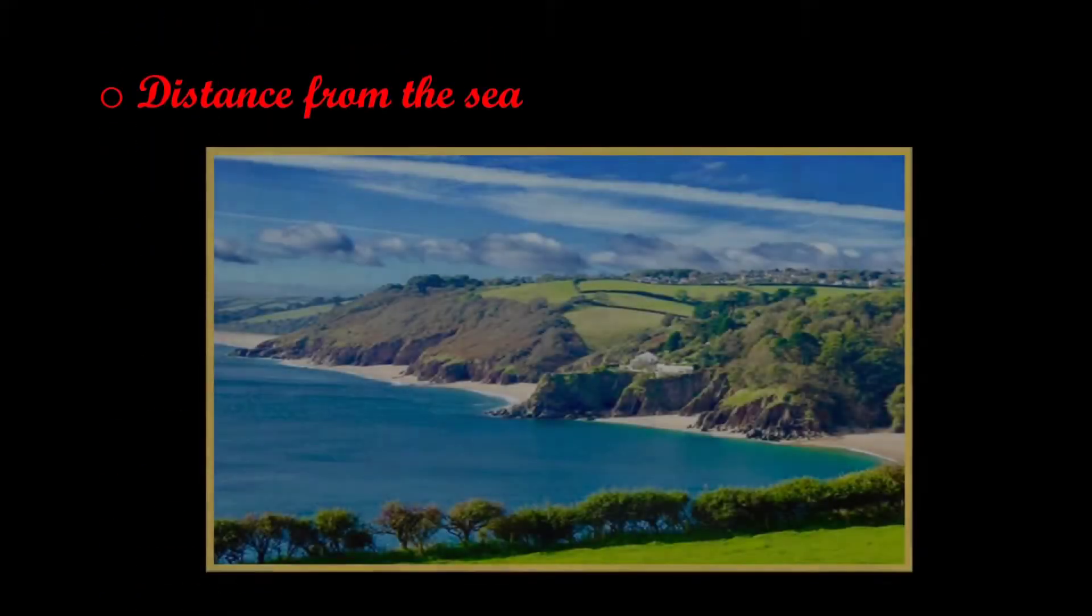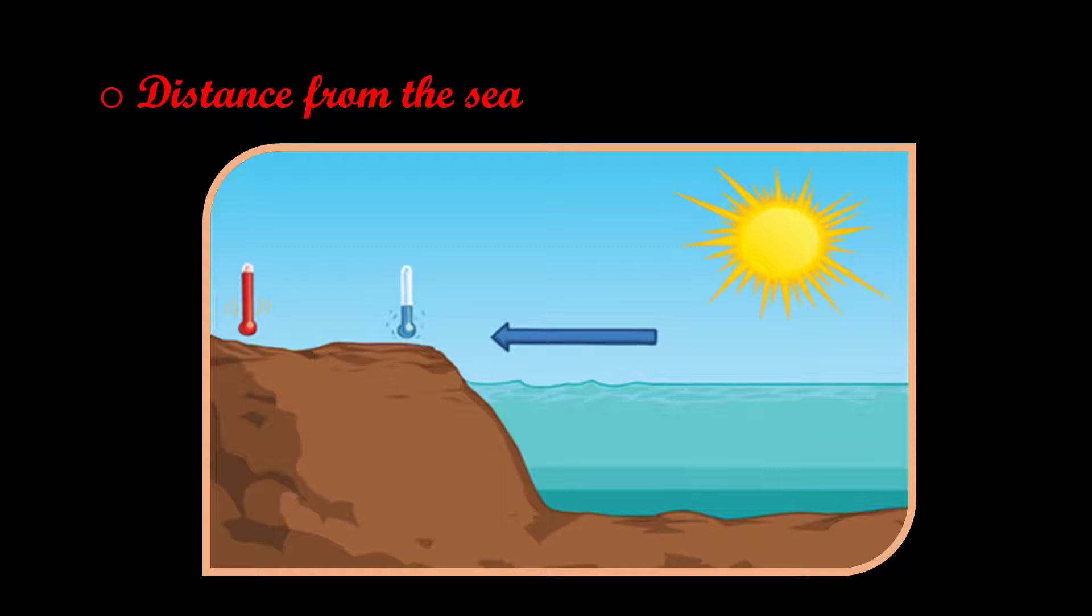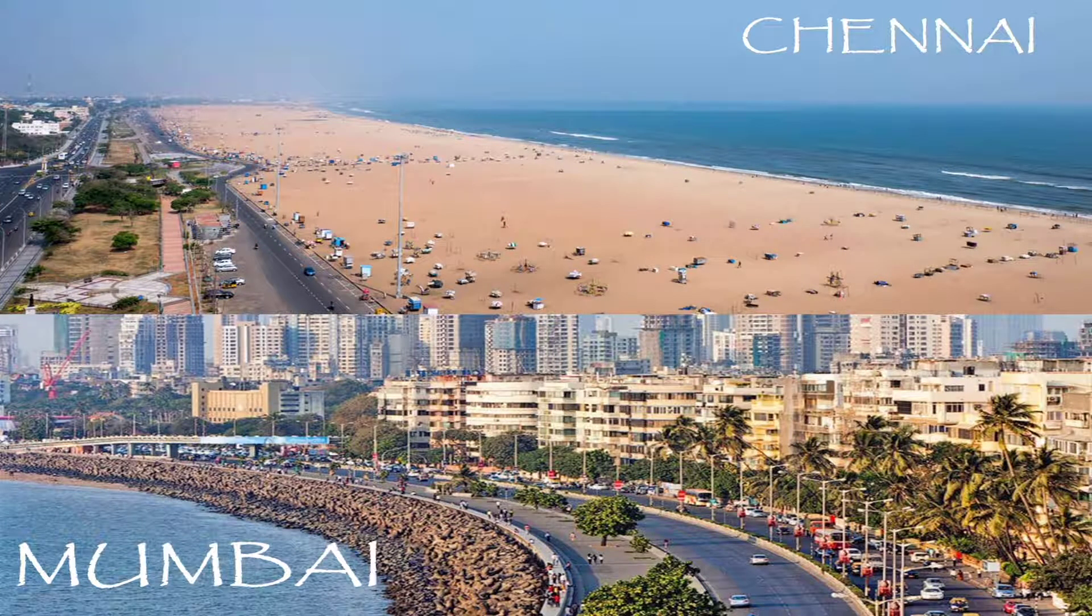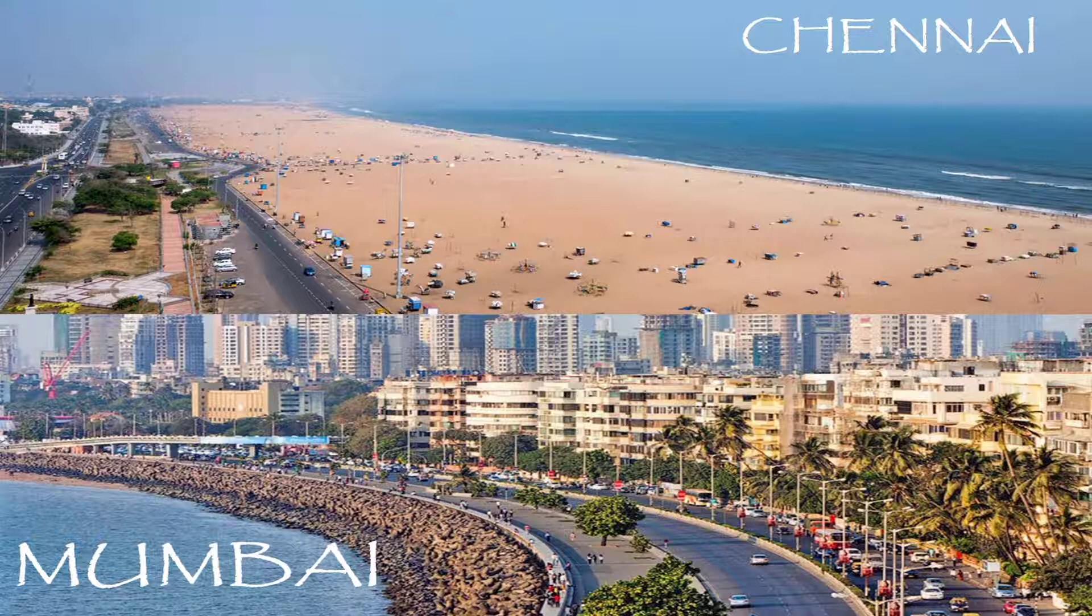Distance from the sea: The climate of a place is also affected by its distance from the sea. If a place is near the sea, the climate is moderate, means there is no drastic change in the weather throughout the year. Such as Mumbai and Chennai experience less variation in temperature than places far away from the sea, which tend to have extreme climates with very hot summers and very cold winters.